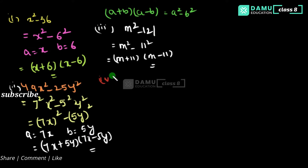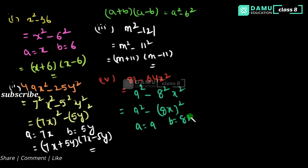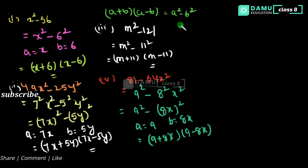The fourth one is 81 minus 64x squared. We can write 81 as 9 squared and 64x squared as 8x whole squared. So this becomes 9 squared minus 8x whole squared, where a equals 9 and b equals 8x. Applying the formula gives us 9 plus 8x into 9 minus 8x.